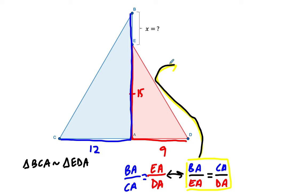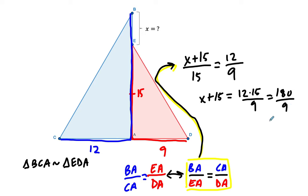So BA to EA. So what is BA? Well, it's this unknown distance x plus the 15 down here. So it's x plus 15. And EA is just 15. And that has to be equal to CA over DA. So CA is 12. And DA is 9. So let's just solve for x. I'm going to multiply both sides by 15. 15 divided by 15 on the left, it cancels to 1. And then we have 12 times 15 over 9, which is just 180 over 9, which is 20. And x plus 15 equals 20. So x equals 5.